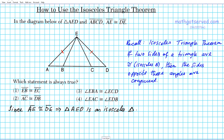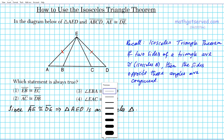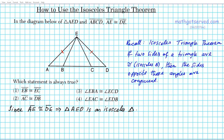We have these two sides that are congruent. What are the angles opposite those sides? Opposite this side is this angle, and opposite this side is this angle. Remember, we're looking at the bigger triangle on the outside — don't let the inner triangle confuse you. The angles opposite those congruent sides in the bigger isosceles triangle AED are the two congruent base angles.